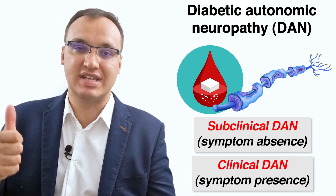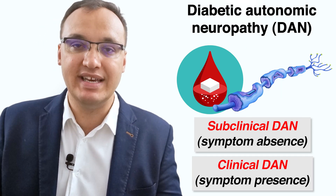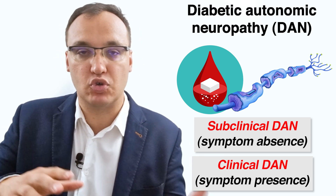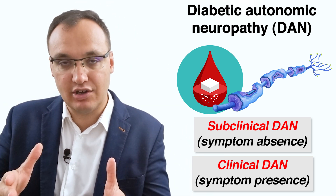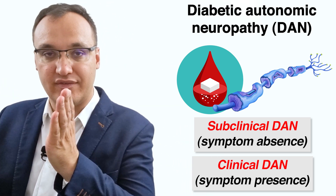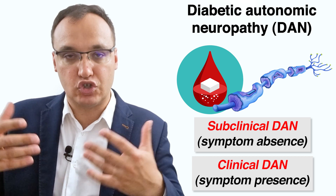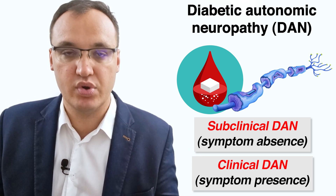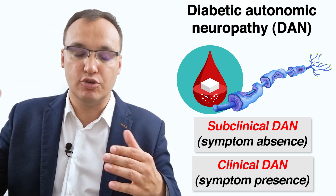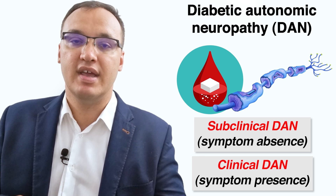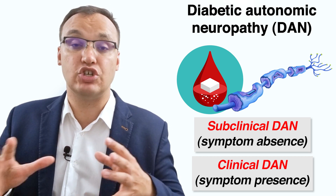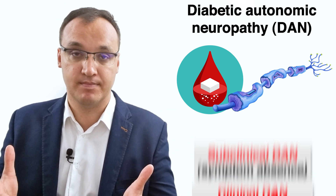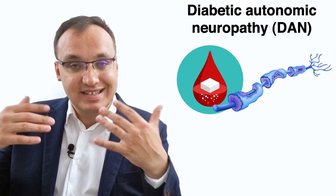We can classify diabetic autonomic neuropathy into subclinical or clinical, depending on whether we have symptoms or not. Clinical is when we have symptoms, and the clinical symptoms are many. We will list all the symptoms depending on which system is affected.